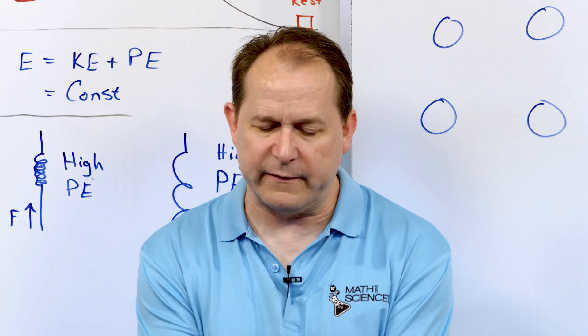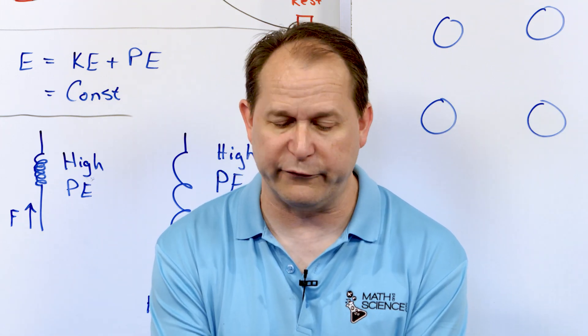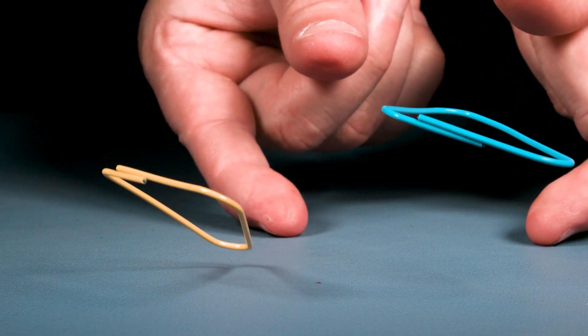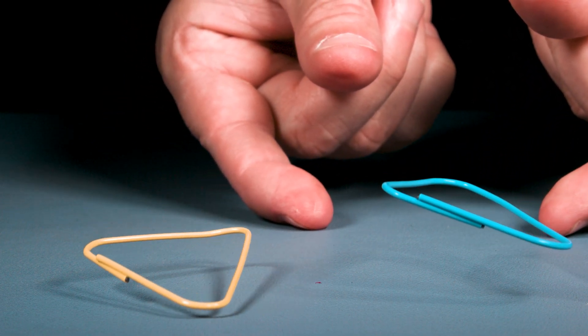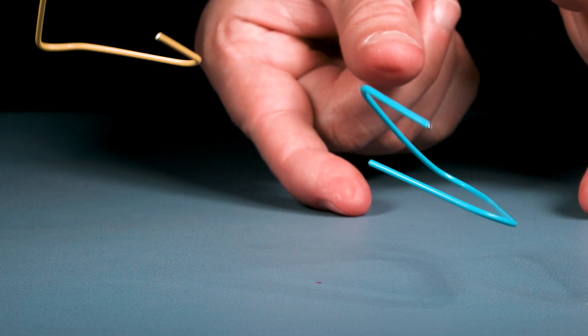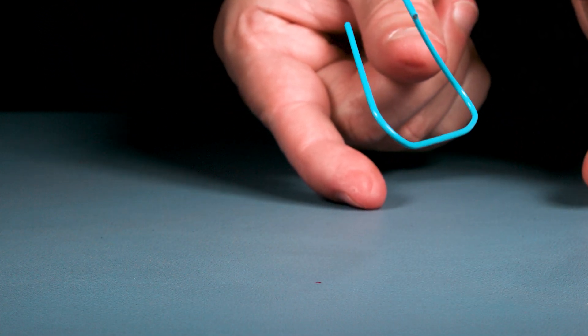But inside of this paperclip, there's some resonant frequency there as well, because there's a length to it, there's a mass to it, and so on. So as it was triggering, I thought it was fascinating to watch the wobble back and forth at the resonant frequency there until the oscillations dampened out.